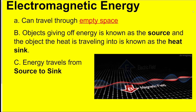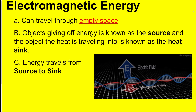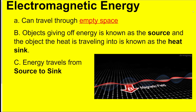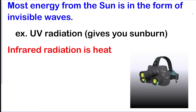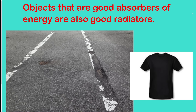For electromagnetic energy, heat goes from source to sink — hot to cold. Energy that comes from the sun comes in all types of wavelengths. Specifically in this unit, we'll talk about UV radiation, which is what gives you sunburn, and infrared radiation, which is heat.